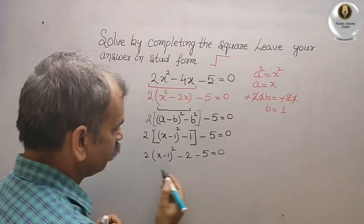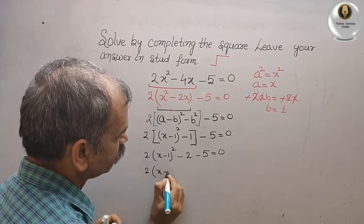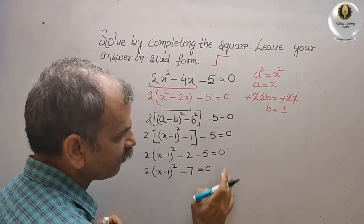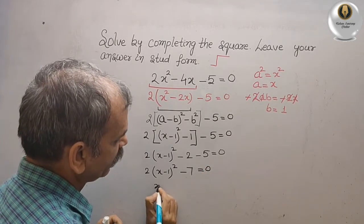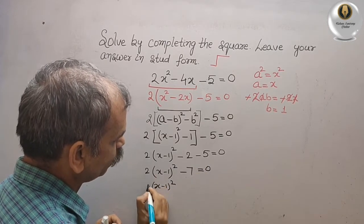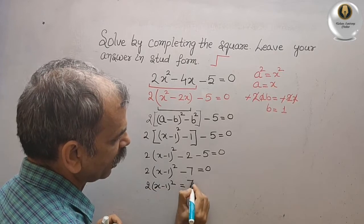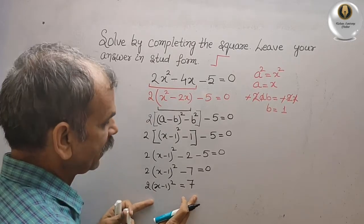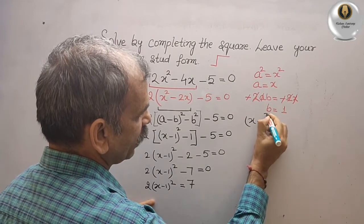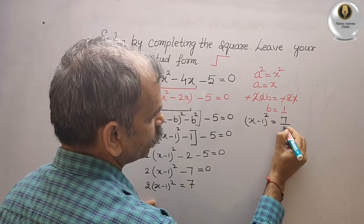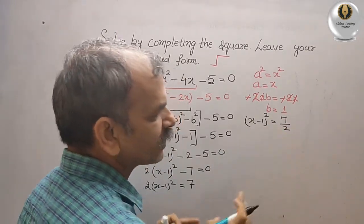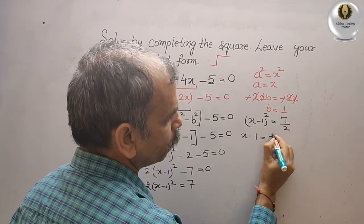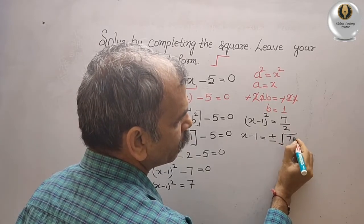Now solving this, we get 2(x minus 1) whole square minus 7 equals 0. Bring minus 7 to this side: 2(x minus 1) whole square equals 7. Bring the 2 downwards — divide — so we get (x minus 1) whole square equals 7 by 2. Therefore x minus 1 equals plus or minus root over 7 by 2.